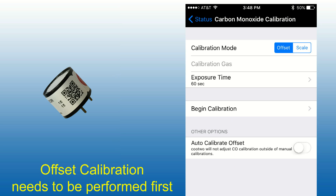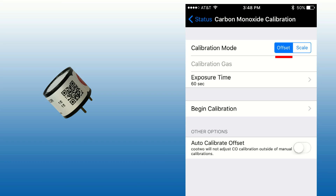The offset calibration must be done first. To perform the carbon monoxide sensor offset calibration, select Offset. Then select the exposure time — minimum of 60 seconds.